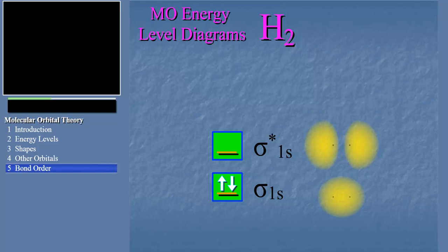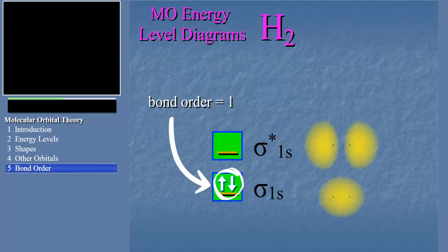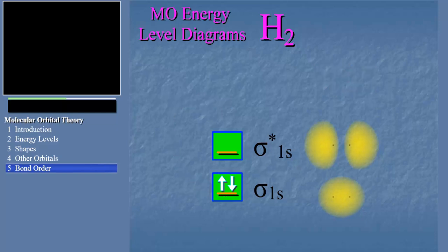From an energy level diagram like this, we can actually calculate for a diatomic molecule its bond order. In molecular orbital theory, having two electrons in a bonding-type orbital is the equivalent of one bond. Having one electron in a bonding-type orbital would be the equivalent of half a bond. So in this hydrogen molecule, we have two electrons in a bonding-type orbital, and therefore the bond order is one — which is probably what you would have predicted just from the Lewis dot structure of hydrogen. Now, what if we were to take one of those electrons away to form the H2 plus ion? We have one electron in a bonding-type orbital, and that's the equivalent of half a bond, so the bond order is 0.5.